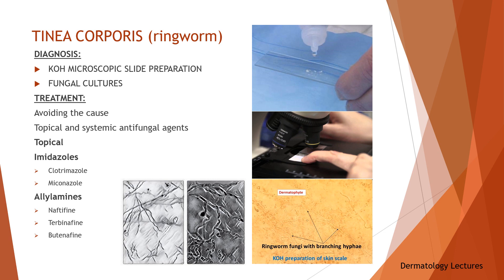Using a scalpel blade, the scales are scraped at the active border of the lesion with particular care not to cause pain or bleeding. The specimen is transferred to a glass slide and a cover slip is placed on top to protect the specimen. A drop of 10 to 15 percent KOH is added and the specimen is gently heated. Overheating or boiling the specimen may cause the KOH to crystallize, which leads to artifacts. The specimen should first be examined under low power magnification. The KOH and heat dissolve the keratinocyte cell membrane, leaving behind easily visualized septate hyphae which are long and may be straight or wavy. These structures may also branch and generally have a uniform diameter. If repeated KOH preparations are negative in a patient with a clinically suspected dermatophyte infection, fungal cultures are recommended.